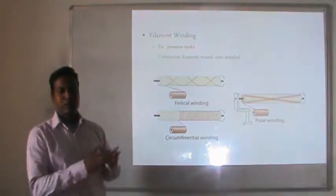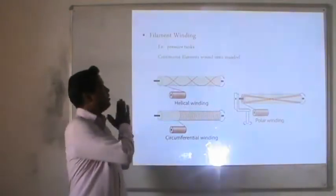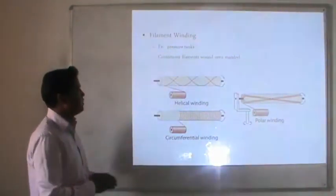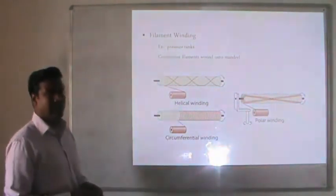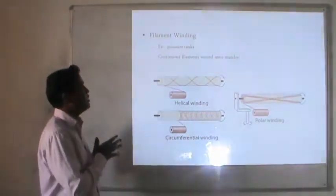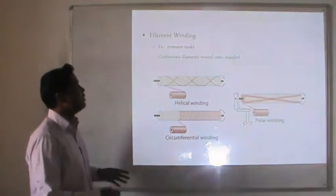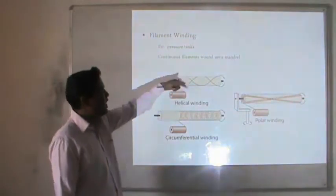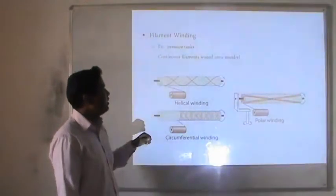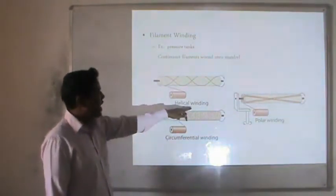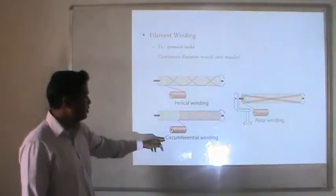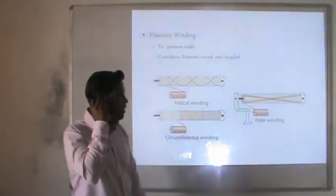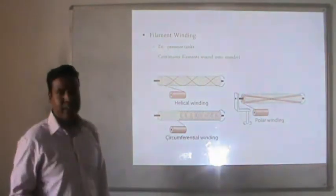Filament winding is a composite manufacturing method used for pressure tanks. Continuous filament is wound onto a metal mandrel. The winding patterns include helical winding, circumferential winding, and polar winding. This process is used to produce cylindrical structures.